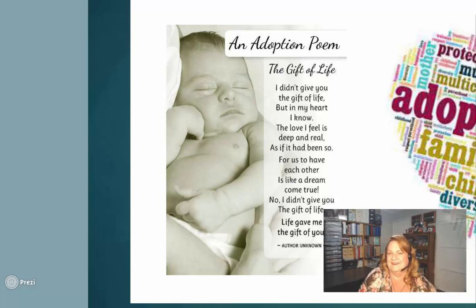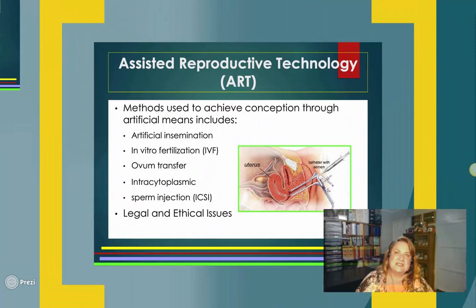There are different types of reproductive technology or ART. Artificial insemination is the fancy term — people call it the turkey baster.